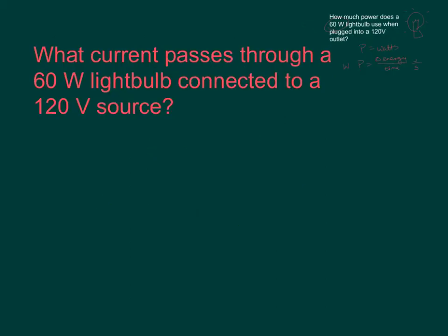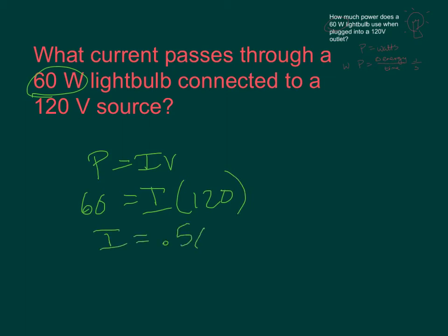A more appropriate question would be to ask what current passes through the light bulb when it's connected to the source. We would take our equation P equals IV, and our power is 60 watts. So 60 equals I times 120, and we find that our current is 0.5 amps. We could also find the resistance of that light bulb because we could use a different version of that equation, V squared over R, to solve for the resistance.